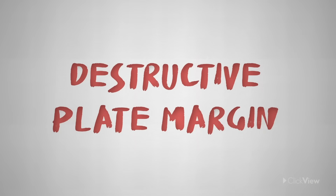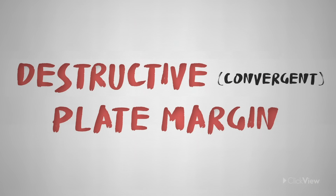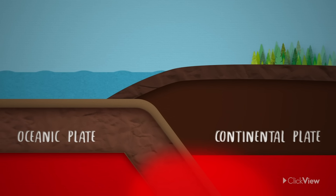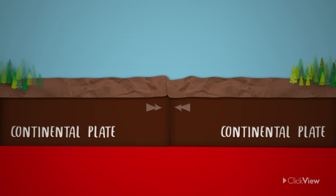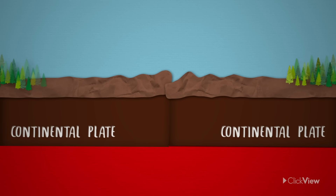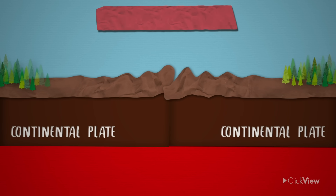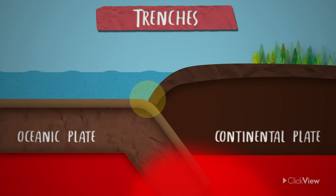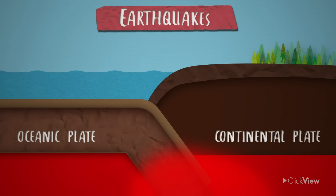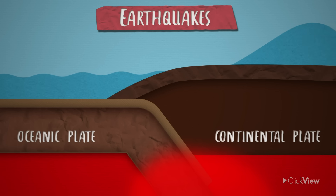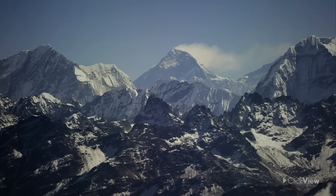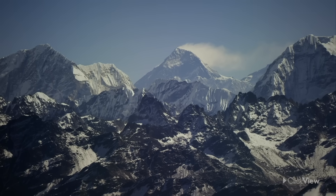At a destructive or convergent plate margin, two plates move towards each other. This can either cause one plate to go under and the other to be pushed up, or two plates to smash together and push upwards. This process can form majestic fold mountains and deep trenches, and often creates powerful earthquakes. This is how the Himalayas in Nepal — home of earth's highest mountain, Mount Everest — were formed.